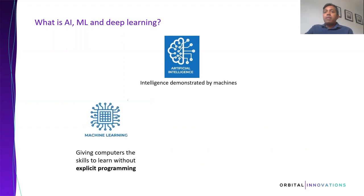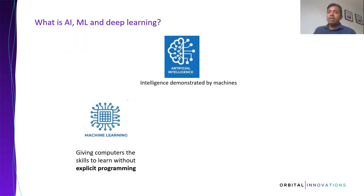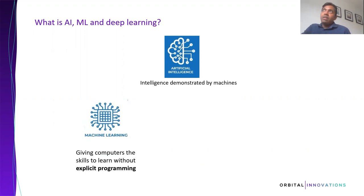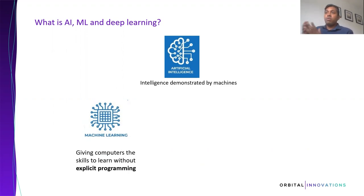Then what is machine learning? Basically, machine learning — think of it as algorithms that give computers the ability to learn or to possess intelligence. There's a big difference between traditional programming and machine learning as a way of helping the computer to understand or demonstrate intelligence.